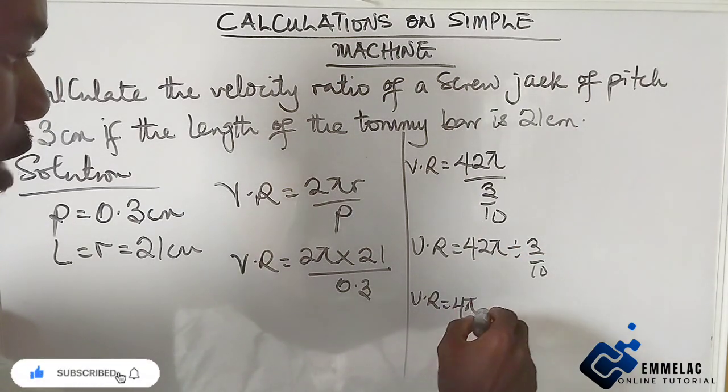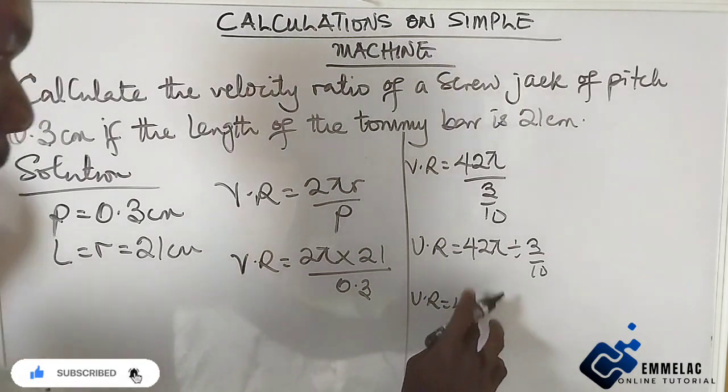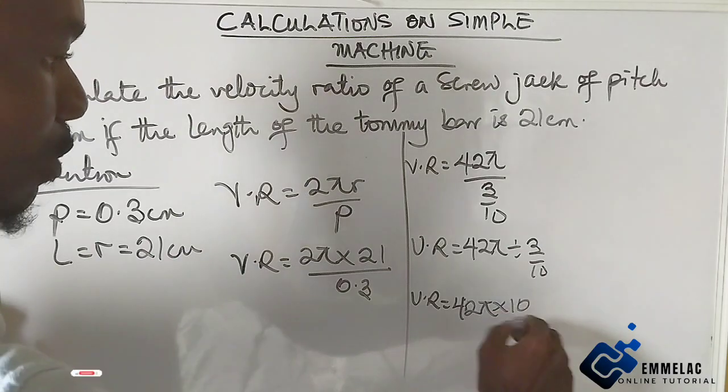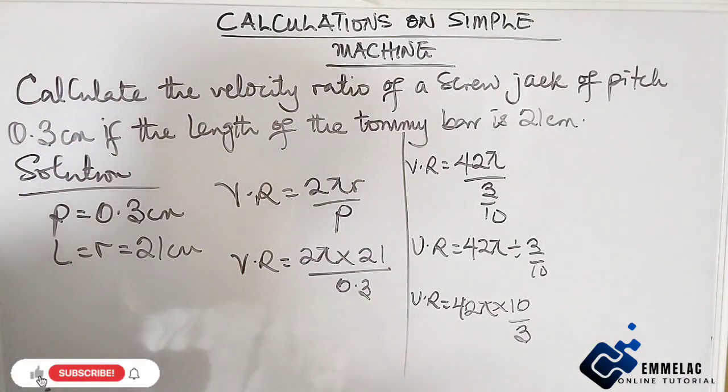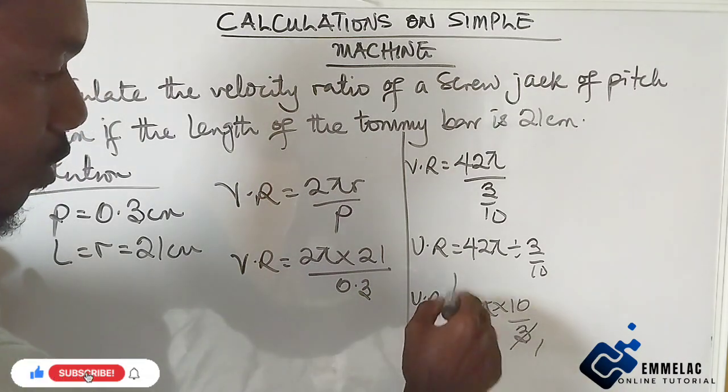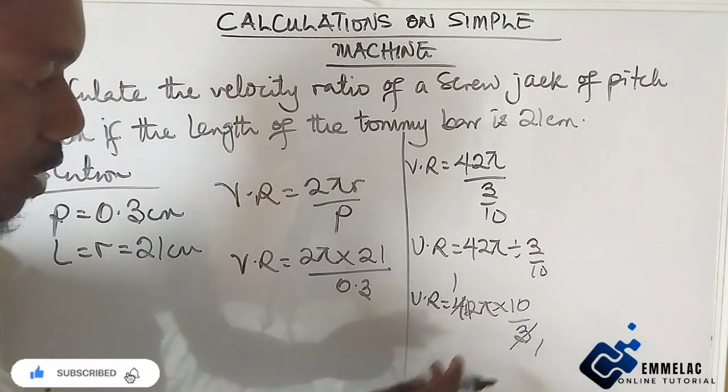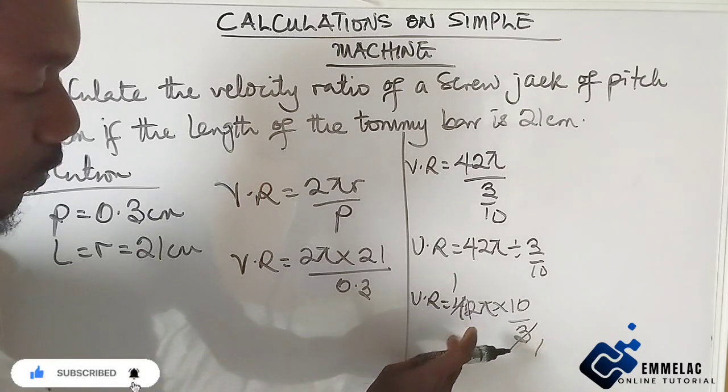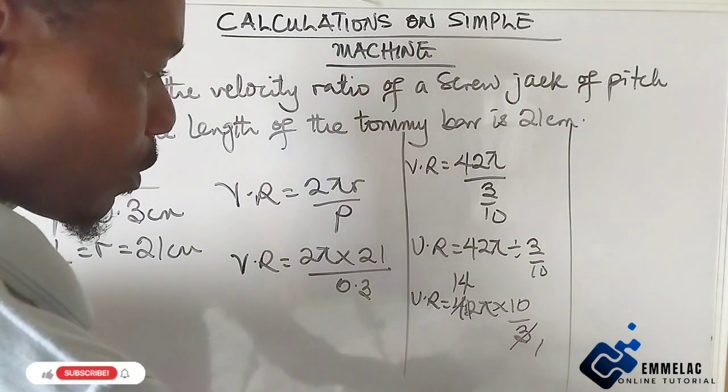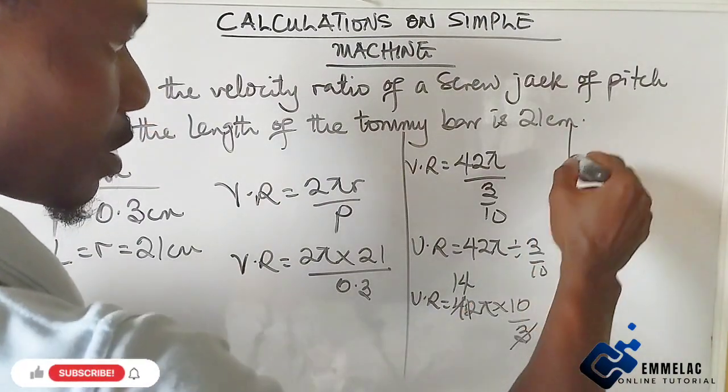42π times 10 over 3. So 3 goes into 42: 3 into 3 is 1, 3 into 12 is 4, which gives us 14. So we are left with the velocity